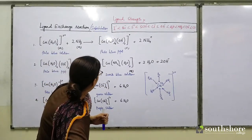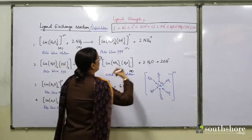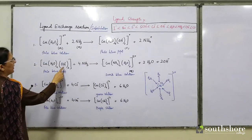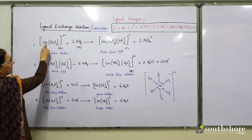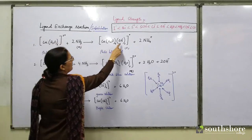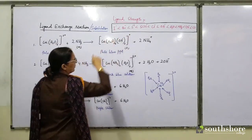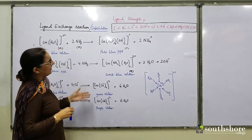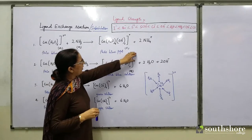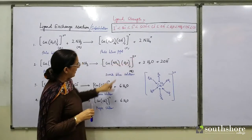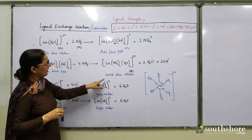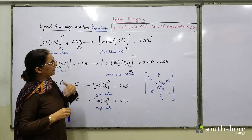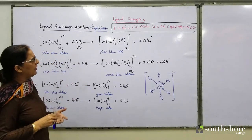Something was missing in this structure — the charge. This is your cationic complex with a positive charge. Minus 2 cancels out with plus 2, so there is no charge here. From previous classes, you have studied there are three types of complexes: a cationic complex having a positive charge, an anionic complex having an overall negative charge, and a complex where there is no charge — such complexes are called neutral complexes.